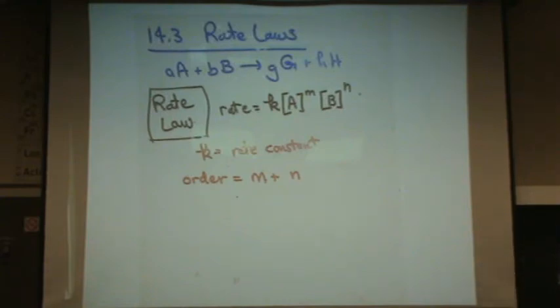So the overall order of reaction here is m + n. The order with respect to A is m, and the order with respect to B is n. But the overall order, you just add the exponents.